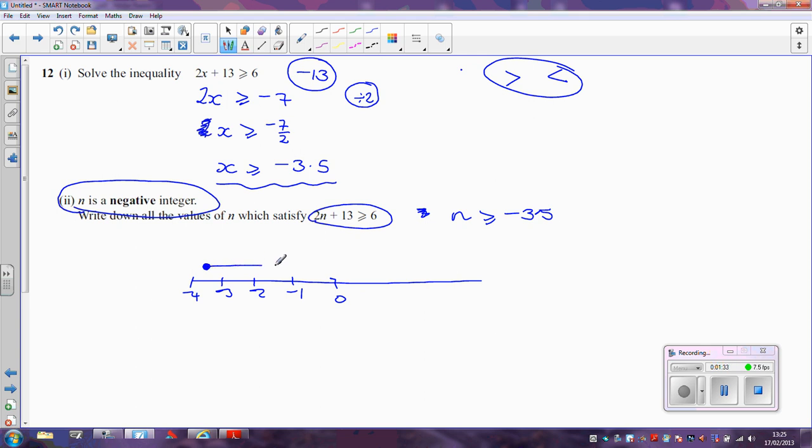So any number greater than or equal to minus 3.5. We're told though that n has to be a negative integer. Now the only negative integers which are featured here on the number line are minus 3, minus 2, and minus 1.